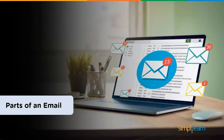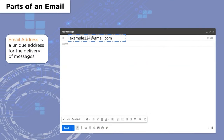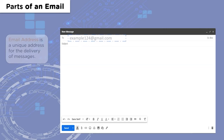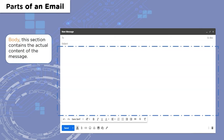Now that we have an idea of how mail gets transferred over different channels and servers, let's look at what makes up an email. First, we have the email address, which is one of the most important parts. It is a unique address used for the delivery of messages — unless an email address is correct, the message will not reach its destination. Then we have the body section, which contains the actual data that has to be transferred.